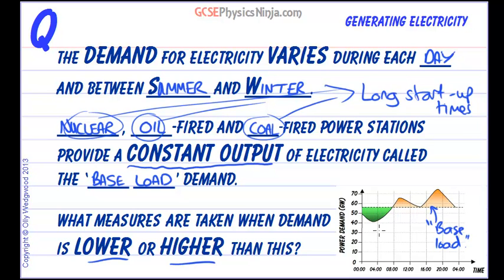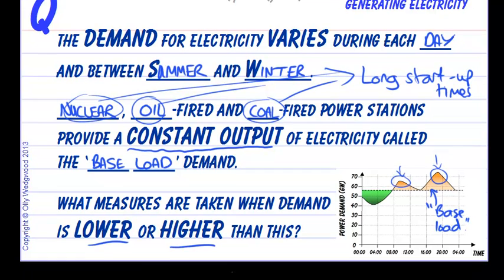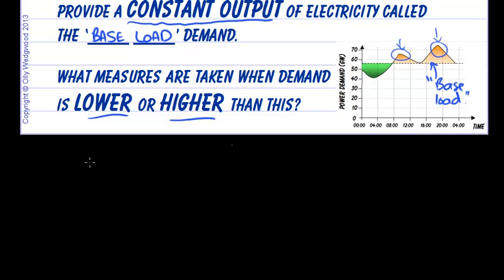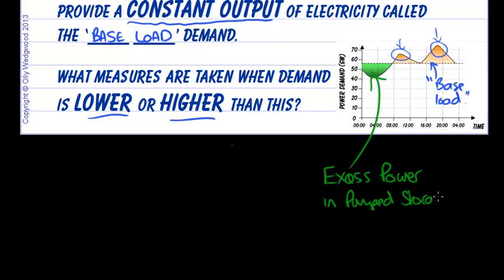When we're all asleep, what happens to the excess energy being generated from nuclear, oil, and coal-fired power stations? And what do we do at peak times — in the morning when people turn on their kettles, or in the evening when the cooker goes on? Well, there are two things. First, we can use the excess power supply in pumped storage schemes. This basically pumps water up to high reservoirs, effectively storing that energy as gravitational potential energy.